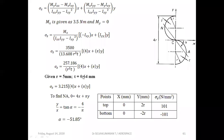To find the neutral axis, set the sigma_z equation equal to zero. This gives 4x + πy = 0, so −y/x = 4/π, and α = −51.85°, which is the position of the neutral axis with respect to the XX axis.